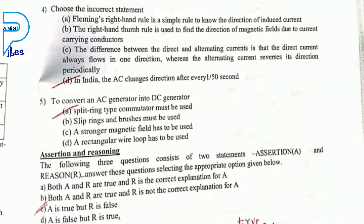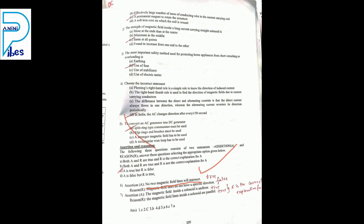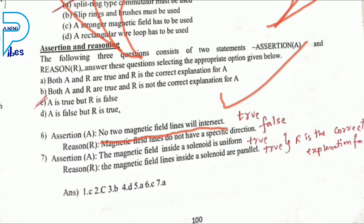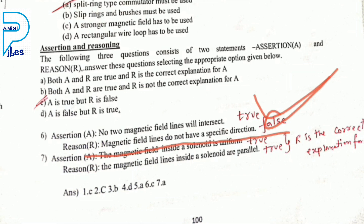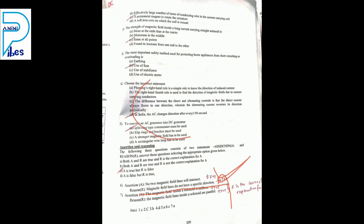In the correct statement: in India, AC changes direction after every 1/100 second, not 1/50 second. Assertion and reasoning: no two magnetic field lines will intersect — yes, it is true. Magnetic field lines do not intersect each other; each and every magnetic field line has an individual path. The statement 'magnetic field lines do not have a specific direction' is wrong — each magnetic field line has a specific direction and individual path.